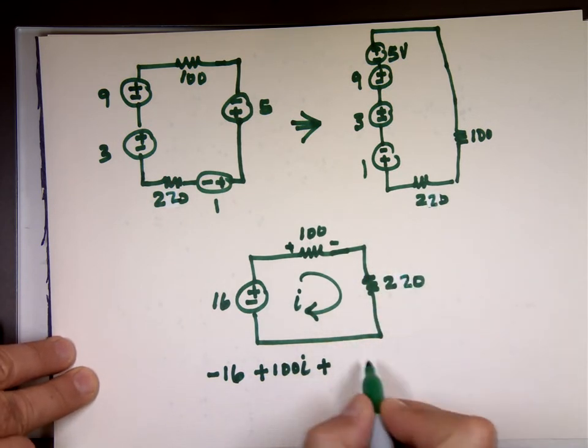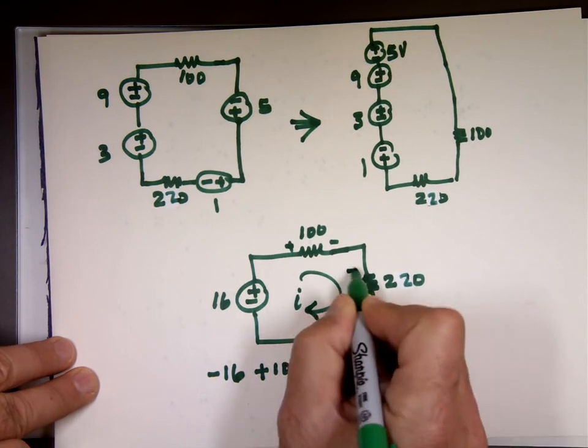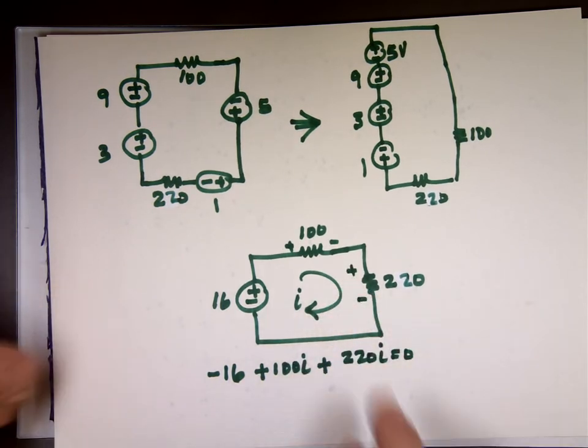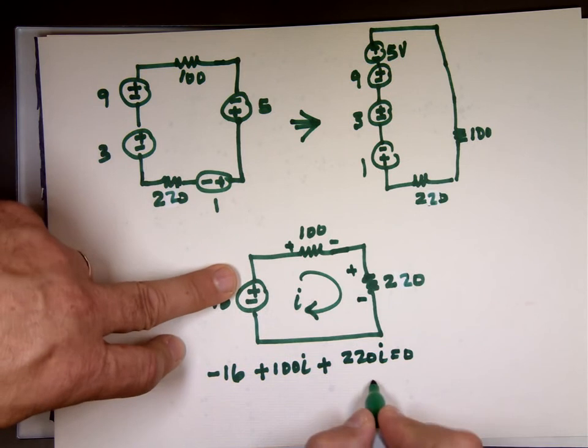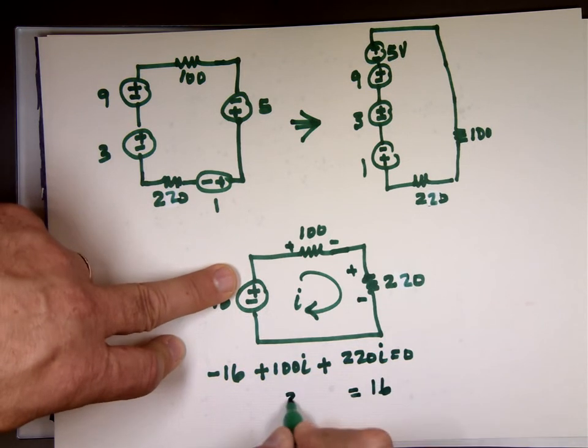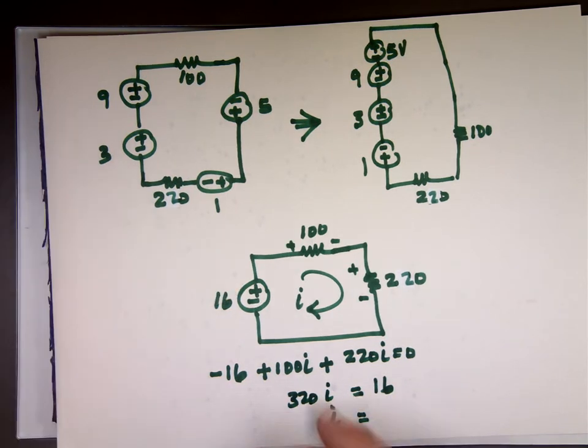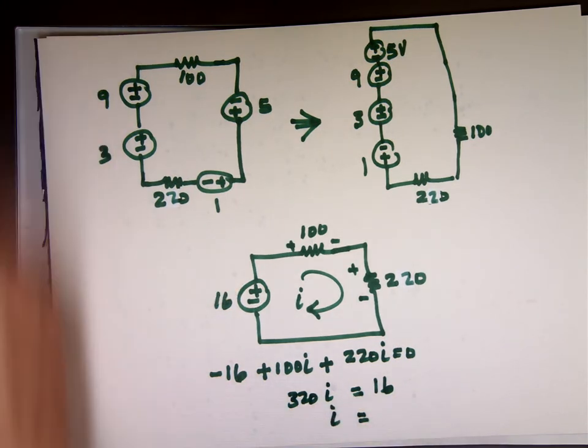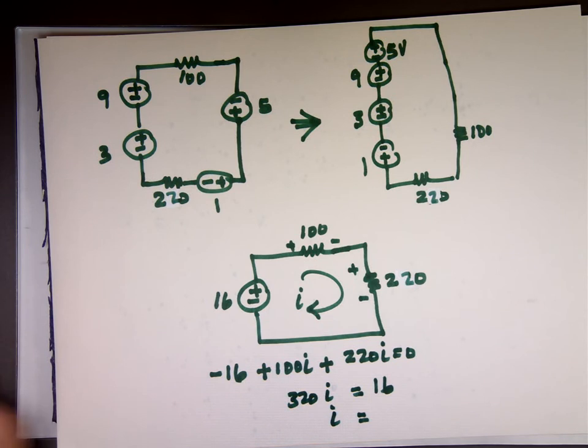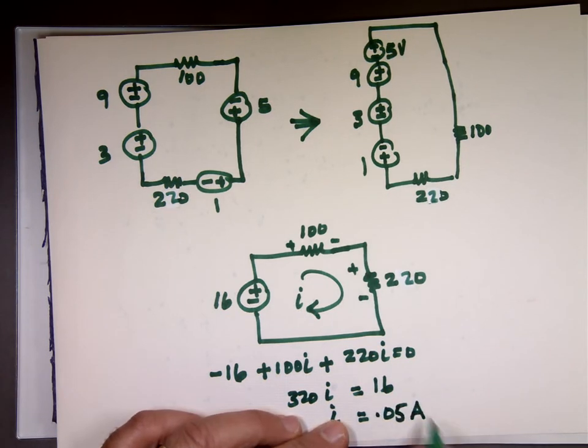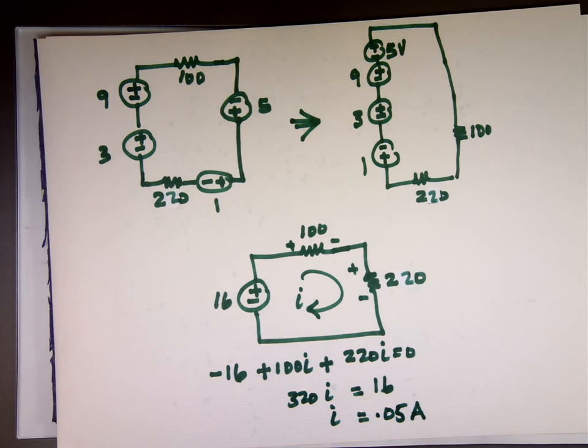Plus 220 I. What's 220 plus 100? 320. Now you can see why I made it 320. That's 16 and 32. 16 is half 32. What's 16 divided by 320? 0.05 amps. If I made it 330, that number is crazy. Keeps going on and on.